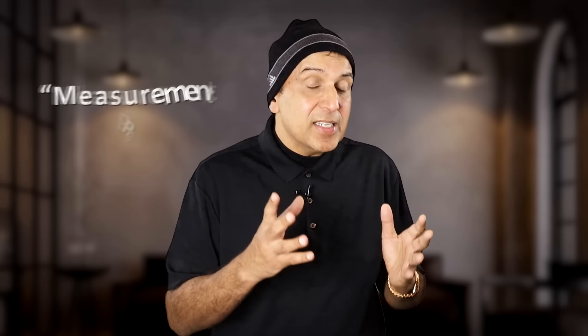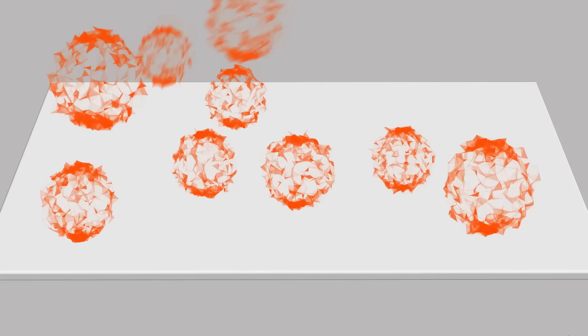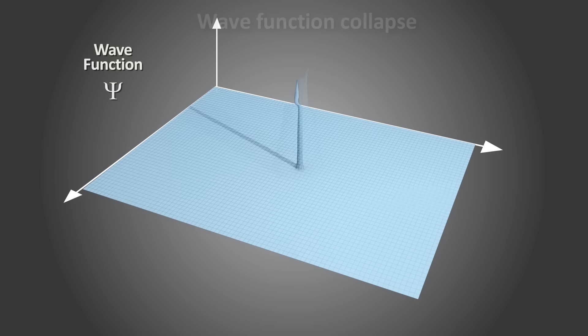This is the famous measurement problem in physics. There is no definitive answer. Decoherence has been used to understand apparent wave-function collapse, and I have a video on this if you want to learn more about it. But decoherence doesn't generate actual wave-function collapse by itself. We know a big change happens upon measurement, but not quite why it happens.